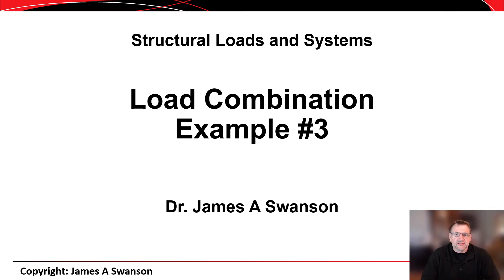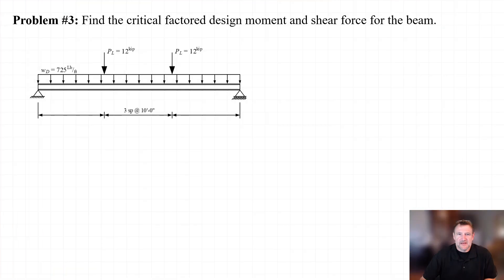In this example problem we'll explore the use of load combinations to determine the maximum bending moment and shear force that would be considered in the evaluation or design of a beam. The LRFD load combinations from the 2016 edition of the ASCE 7 standard will be applied to a simply supported beam under two different loading cases. We are asked to find the critical factored design moment and shear force for a simply supported beam with a span length of 30 feet, subjected to a dead load of 725 pounds per linear foot and a live load consisting of two point loads of 12 kips each applied at the third points of the beam.